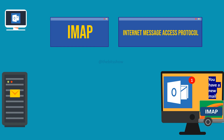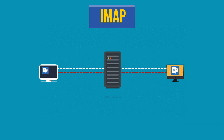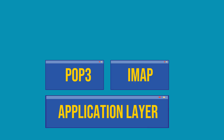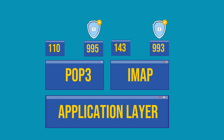While POP3 downloads emails to your device and typically removes them from the server, IMAP retains emails on the server and synchronizes them across all your connected devices, providing convenience by allowing easy access and management of emails from anywhere. POP3 and IMAP operate at the application layer of the OSI model. POP3 uses port 110 and port 995 for non-encrypted and encrypted connections respectively, while IMAP operates on port 143 and port 993 for non-encrypted and encrypted connections.